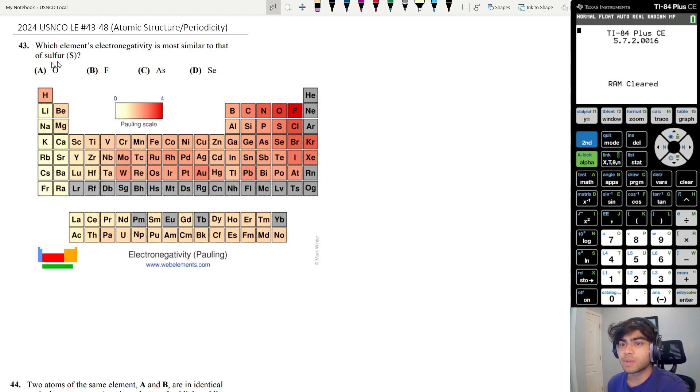Which element's electronegativity is most similar to that of sulfur? If you remember from your periodic trends, electronegativity increases as you go up and to the right.